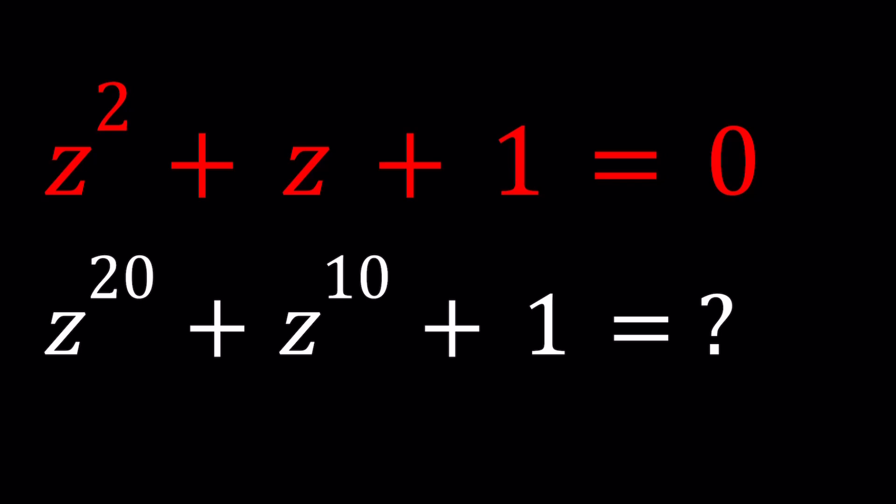Don't worry about the word vigintic because it just means the degree is 20. So we have z² + z + 1 = 0 and we're going to evaluate z²⁰ + z¹⁰ + 1. Something very similar, just multiply the powers by 10. How do we do that? We're going to be using a couple different methods.